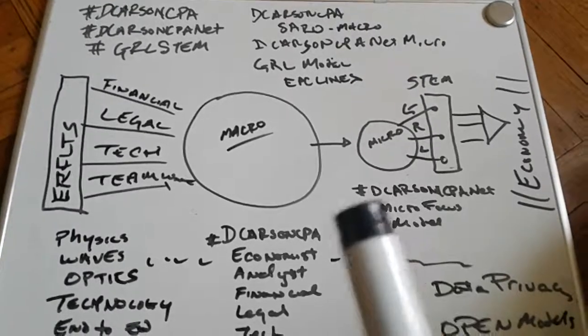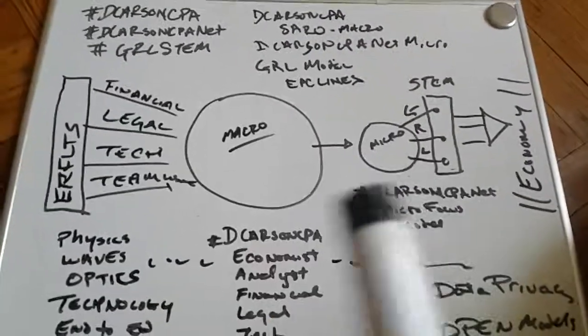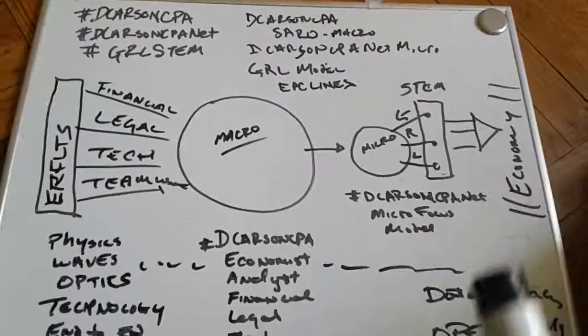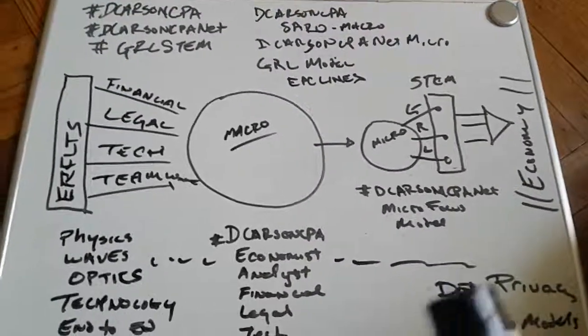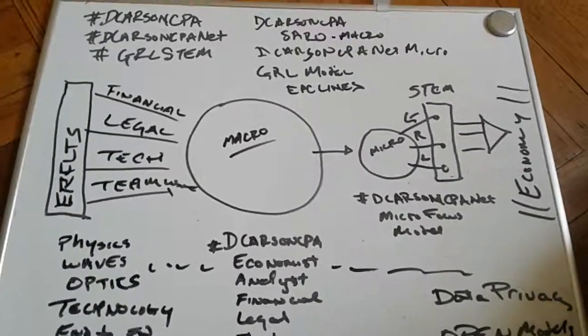Enough said for now. This is D. Carson CPA and Alliance. We're here working with a model to help on services on many levels of macro and micro agility out to the economy and the different subsectors of needs, as well as the macro and micro lines and the contextual lines of financial, legal, tech, and teamwork. Thanks very much.